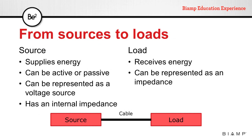In every circuit, we'll have a source and a load. The source is the piece that provides energy into the circuit. It can be active or passive. For instance, an amplifier is an active source while a microphone is a passive source — it is not plugged into the wall to generate energy. It can be represented as a voltage source and it will have an internal impedance. The load, on the other hand, is a unit that receives energy from the circuit, and it can be represented as an impedance. Sources and loads are connected with cables.